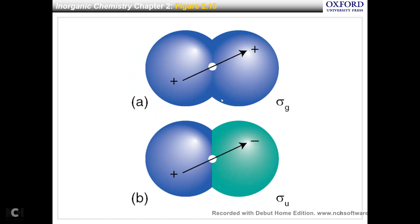Now let's talk about the labels — sigma-G and sigma-U. G is 'Gerade' in German, meaning even function, symmetrical. U is 'Ungerade,' meaning odd function, anti-symmetrical. How do we know if it's G or U? First, you find the center of the molecule. Then you draw an arrow through the center and look at the two ends of the arrow. If they have the same sign, it's a G. If they have opposite signs, it's a U.